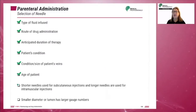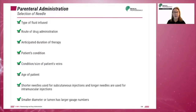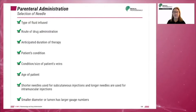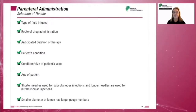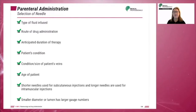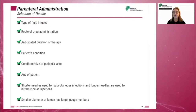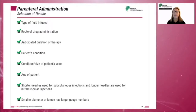The type of needle or cannula used will depend on the fluid infused, the route of drug administration, the anticipated duration of therapy, the patient's condition, the condition and size of the patient's vein, and the age of the patient. Needle length and gauge can also depend on the viscosity of the drug, the site selected, and the specific method of injection. As a general rule, shorter needles are used for subcutaneous injections and longer needles for intramuscular injections.